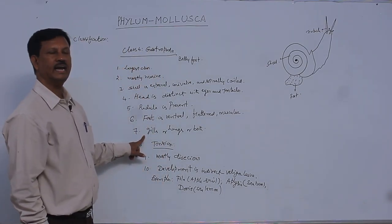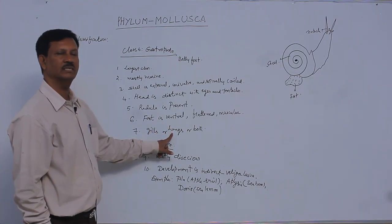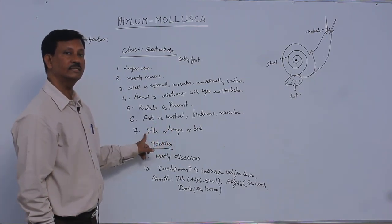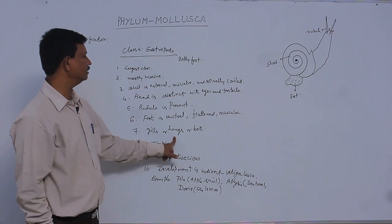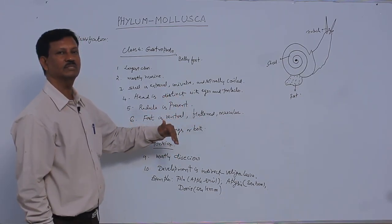For respiration, gills are present in aquatic animals, while lungs are present in terrestrial animals. In some animals, both gills and lungs are present because some animals are amphibious, sometimes on land and sometimes in water.